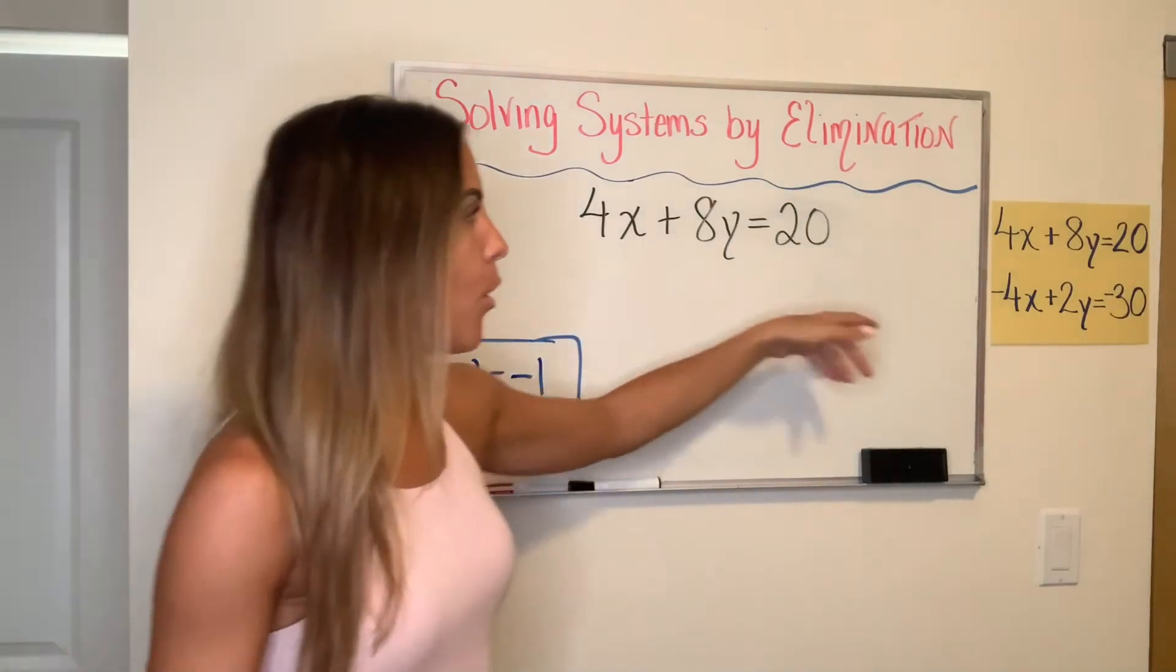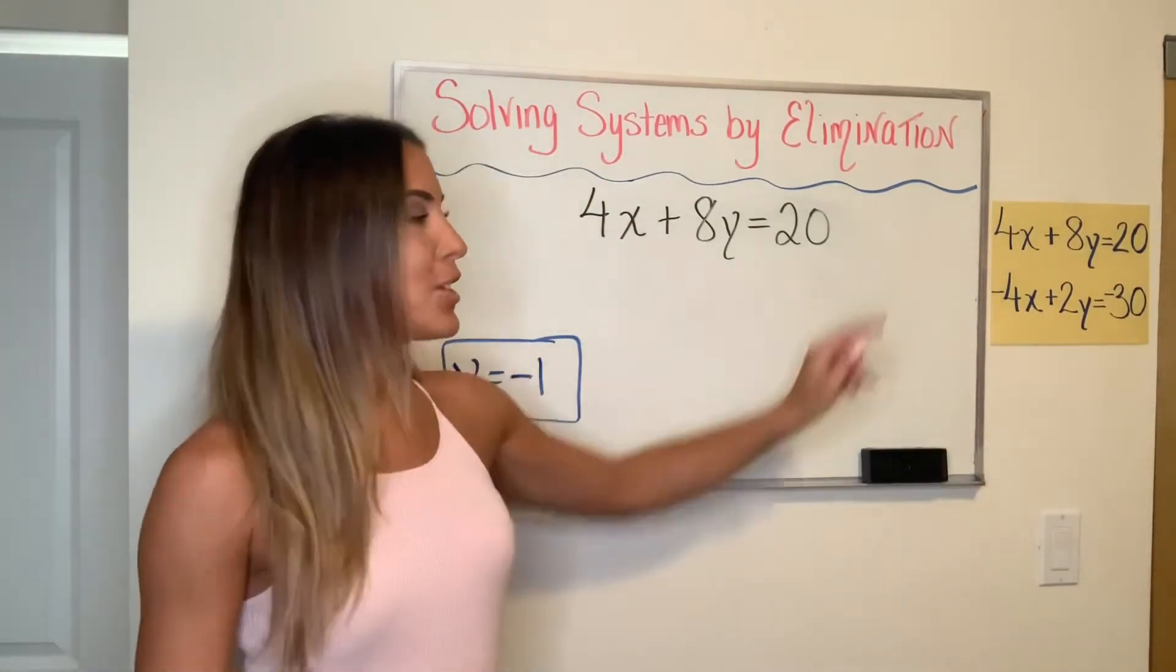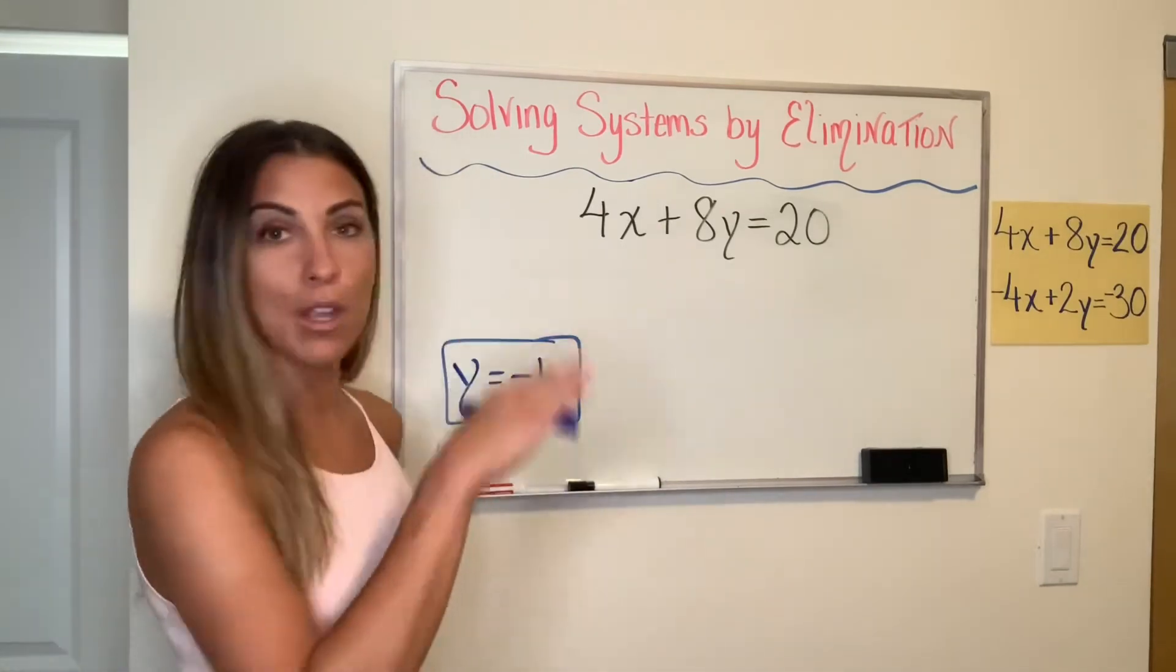I chose the top one because why not avoid that negative. I feel like when there's negatives and fractions, we are more prone to make mistakes. So let's choose that prettier equation up top. But you could have done either one.